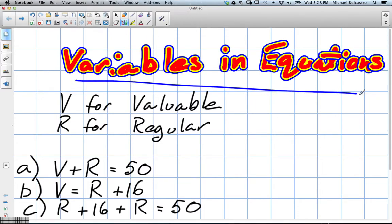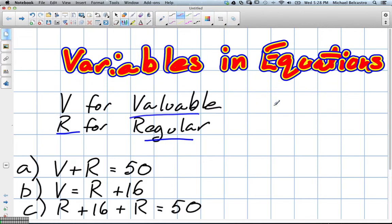Okay, so we're going to look at variables and equations. And what does V stand for? Valuable. Okay, and R? Regular. And what are we talking about? What's valuable and what's regular in this question?